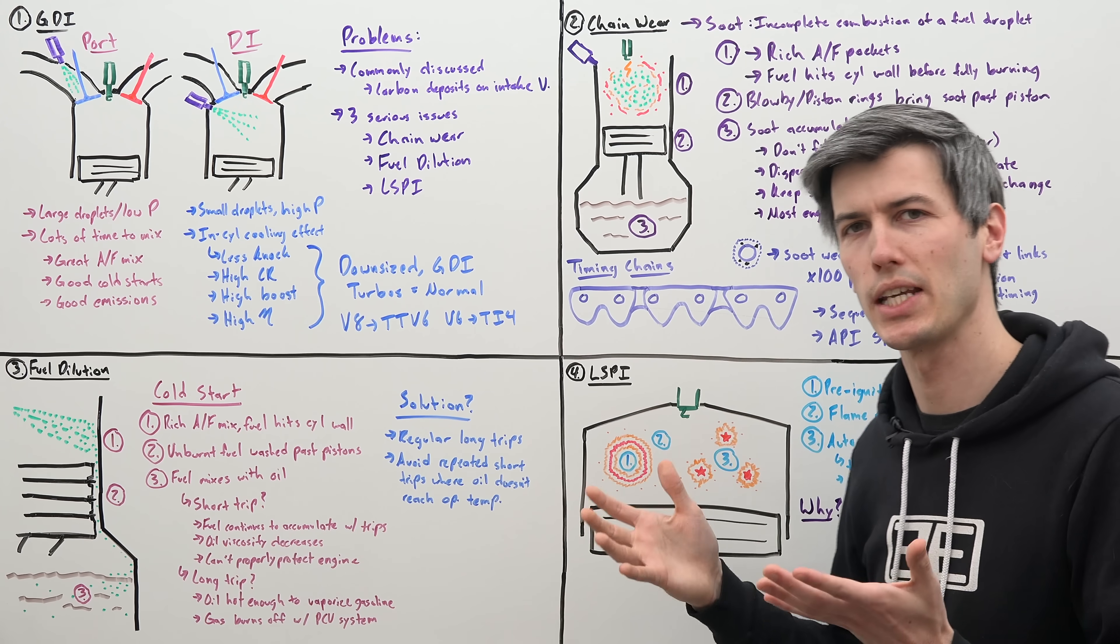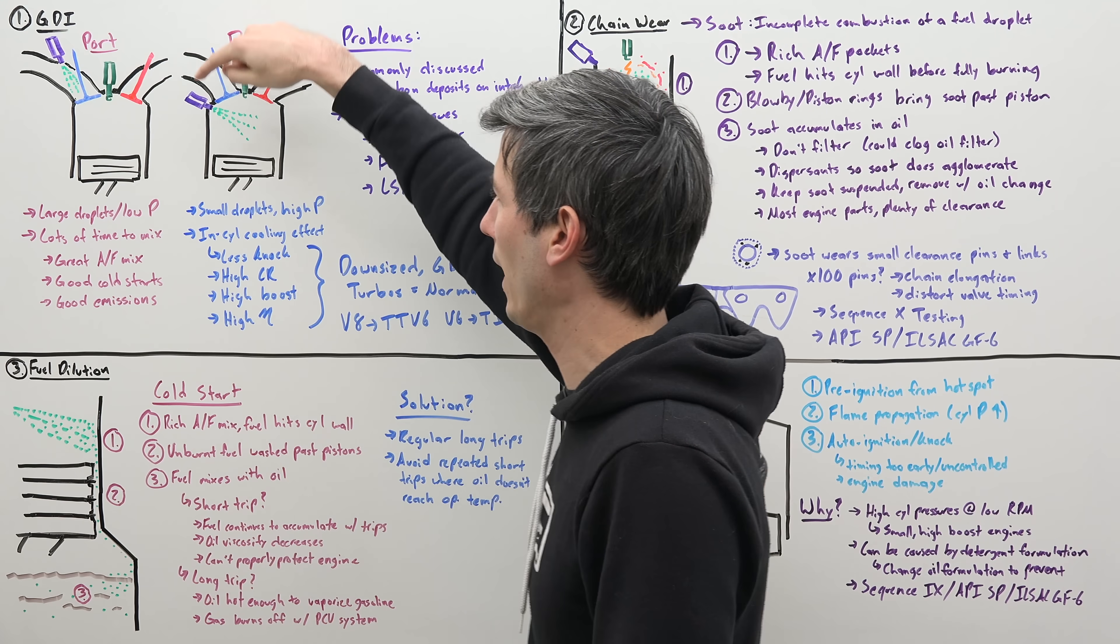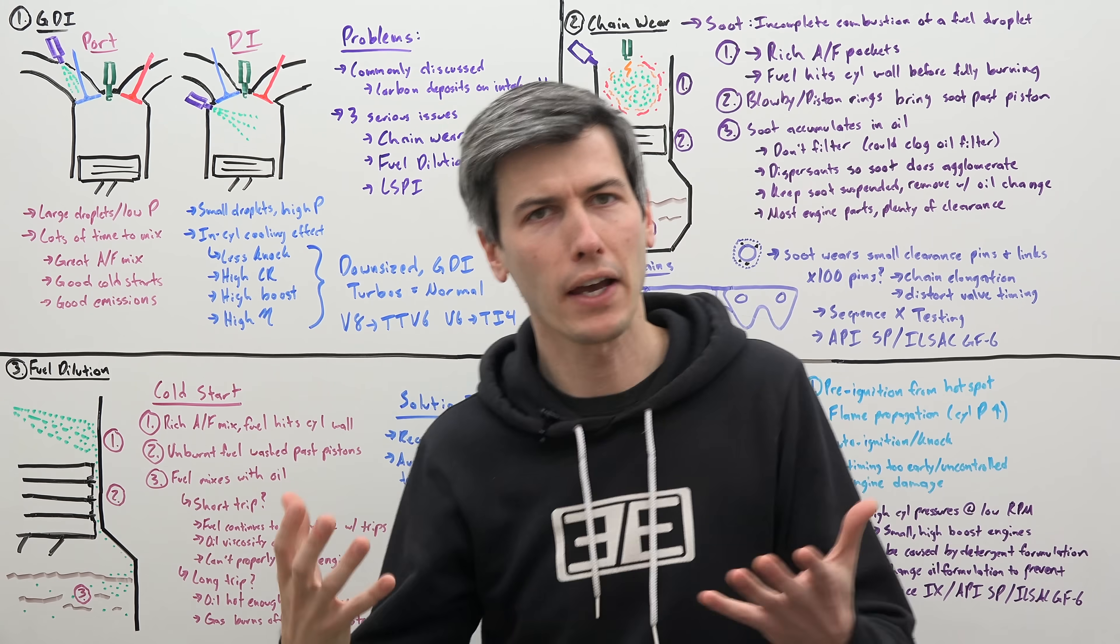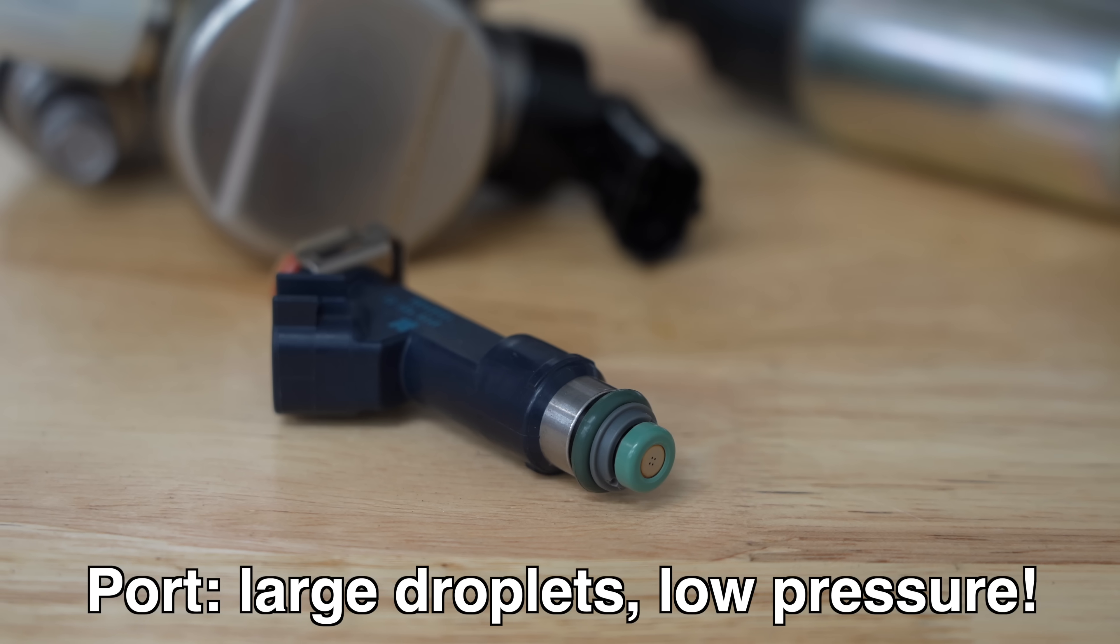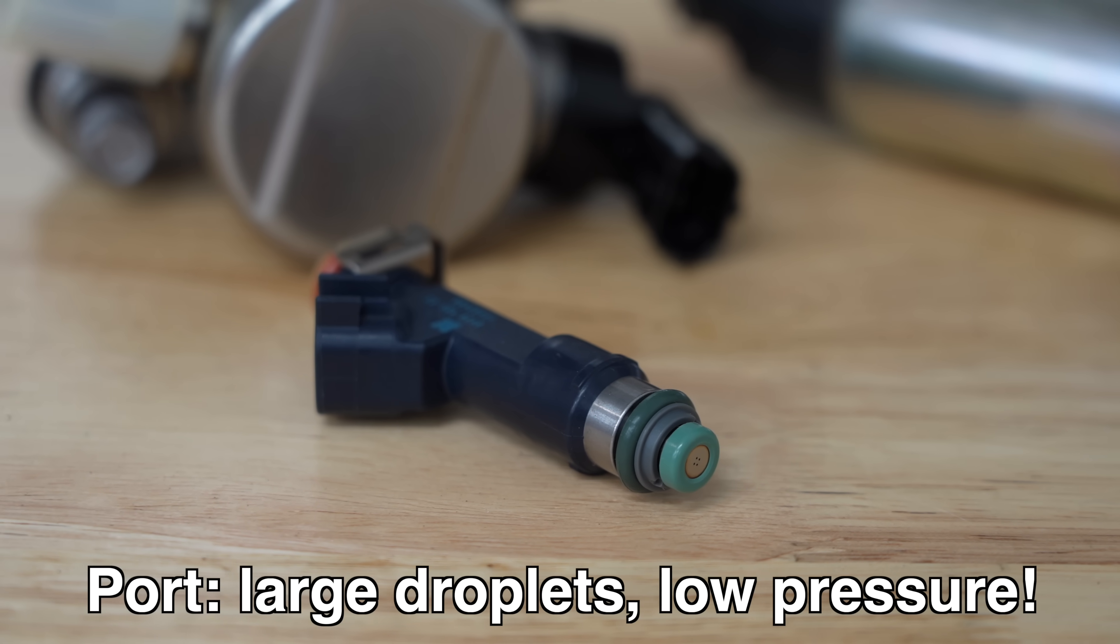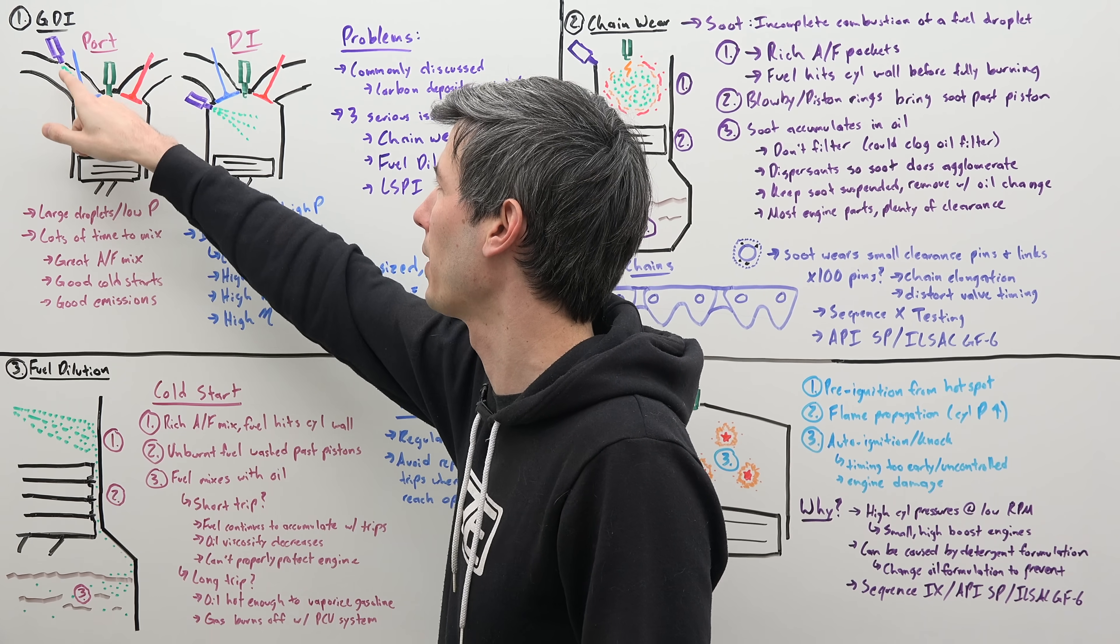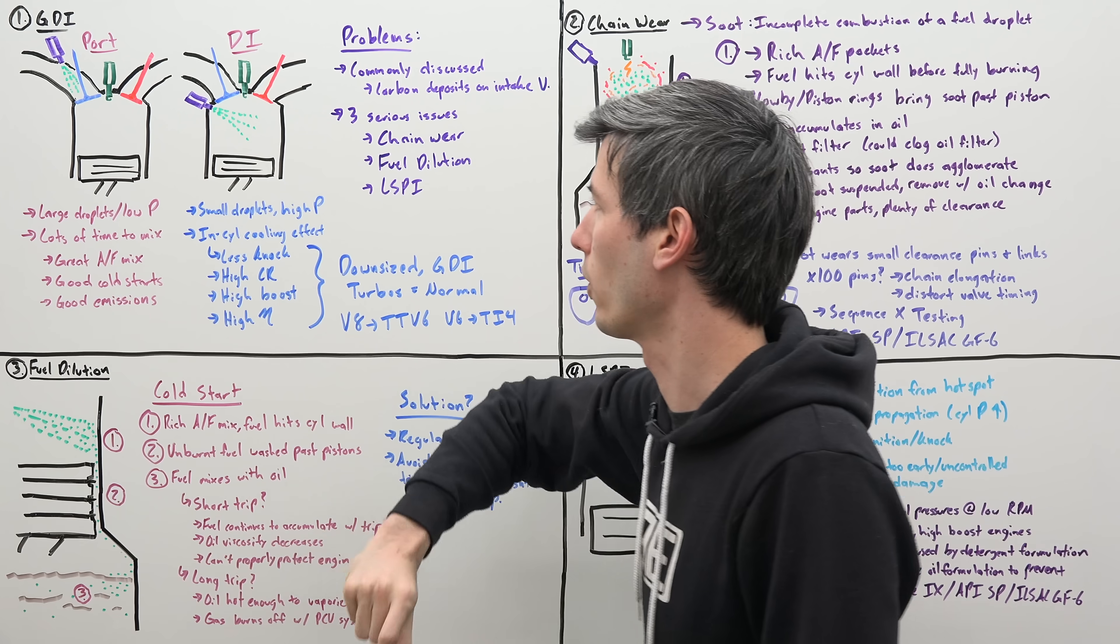So visually the change seems very simple. Instead of injecting our fuel into our intake ports, now we are injecting that fuel directly into the cylinders. However, the effects from this change are fairly dramatic. For port injection, we have large droplets injected at a low pressure. This gives the fuel a lot of time to mix within the intake ports, the entire intake stroke, as well as the compression stroke.